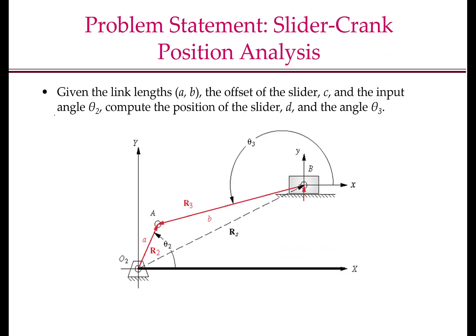Let us now look at the formal problem statement of direct position kinematics for the slider crank mechanism. Given the link lengths A and B — where A is the crank length and B is the coupler length — the offset of the slider C, and the input angle theta 2, we have to compute the position of the slider D and the angle theta 3. In this problem statement, we have assumed that the crank is the input link.